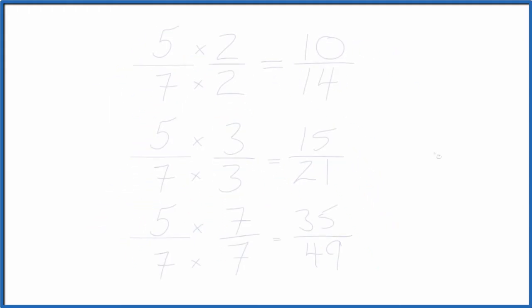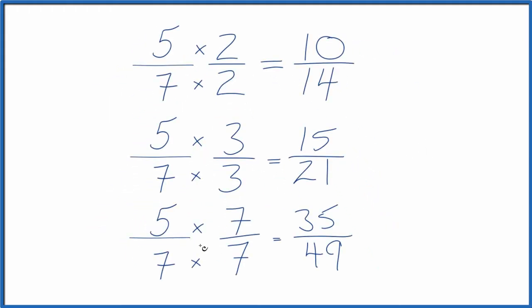One last one. If we multiply 5/7 by 7/7, which is again just 1, we get 35/49. All of these are equivalent fractions to 5/7. If you divide the numerator by the denominator on each one, you'll get the same result as 5 divided by 7.